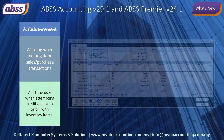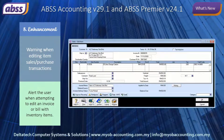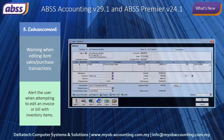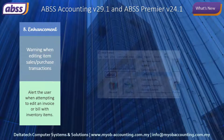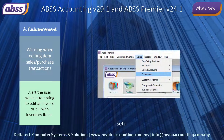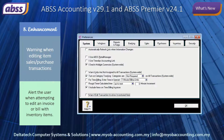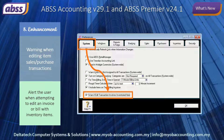You can now enable a warning message to alert the user when attempting to edit an invoice or bill involving an inventory item. To turn on this feature, open your file, then click on Setup, Preferences. In the System tab, select the Warn if edit transaction involves inventory item option and click OK.